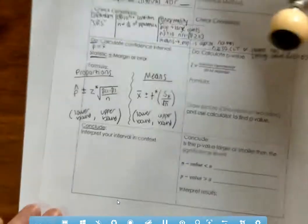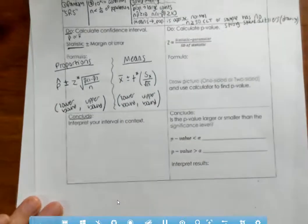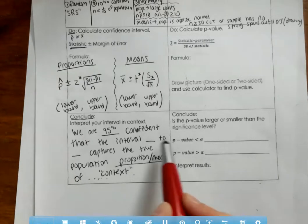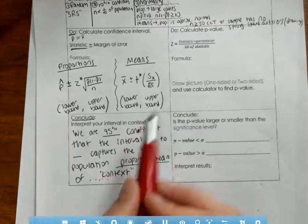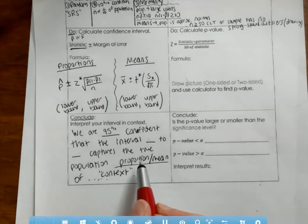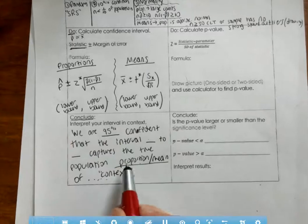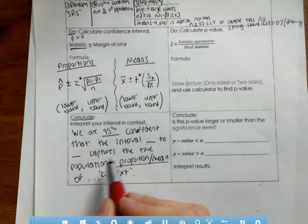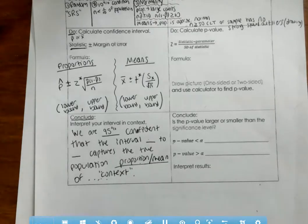Finally, conclude — interpret your interval in context. The sentence structure is: 'We are 95% confident' — and that number changes with your confidence level — 'that the interval [lower bound] to [upper bound] captures the true population proportion or mean of [context].' For example: 'captures the true population mean of the average heart rate.' Use whichever parameter you're calculating — proportion or mean — and fill in the context of the problem.